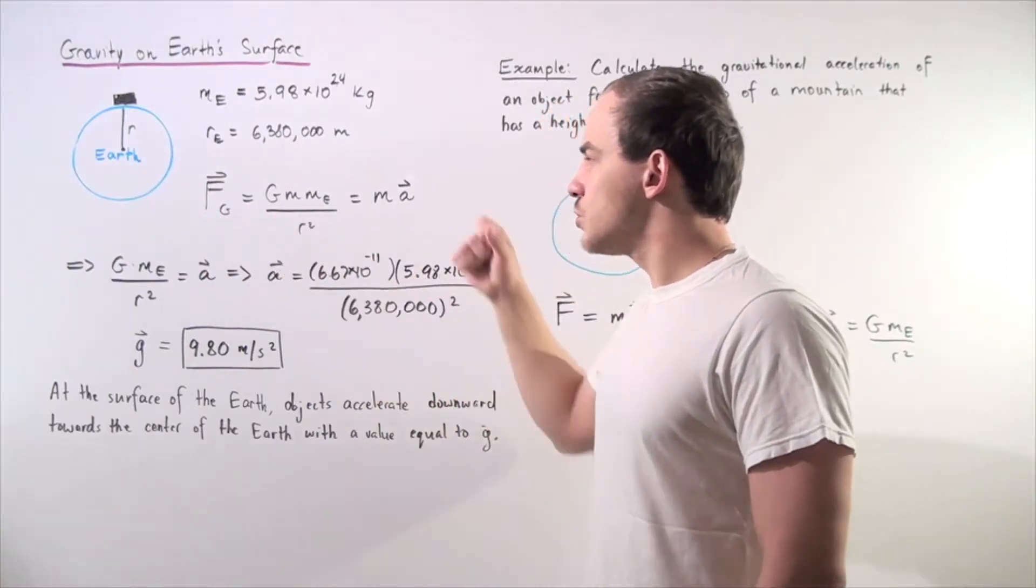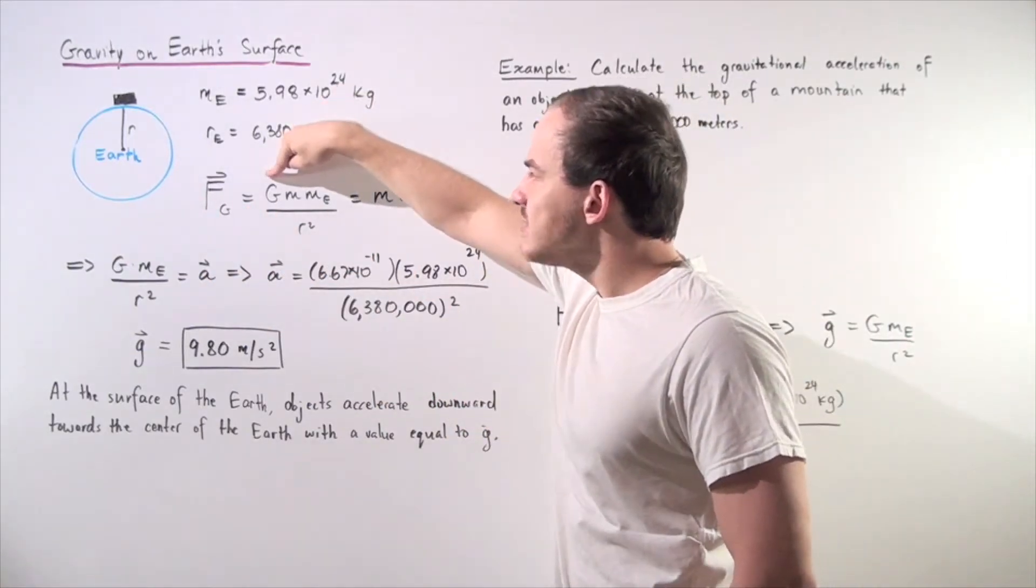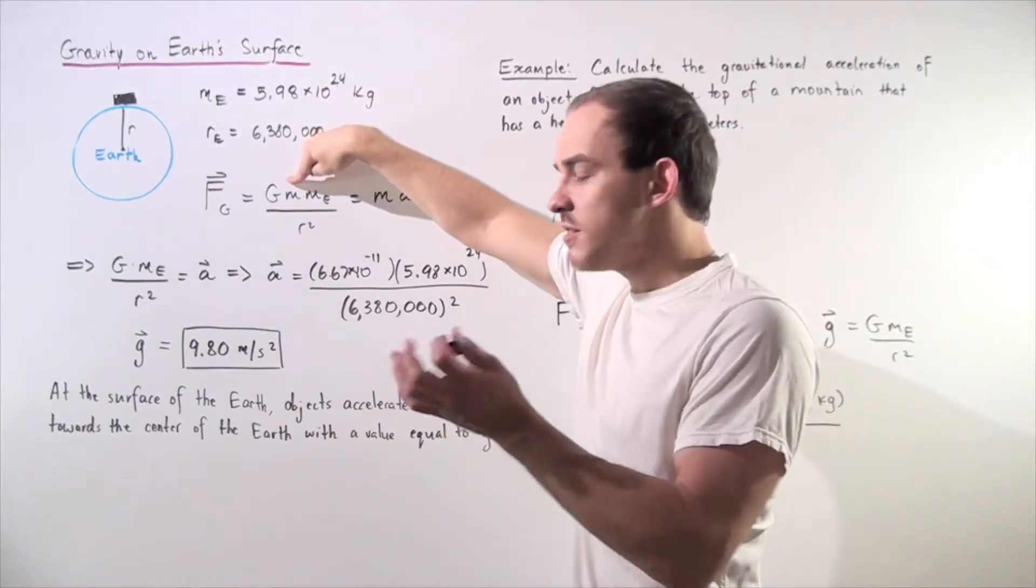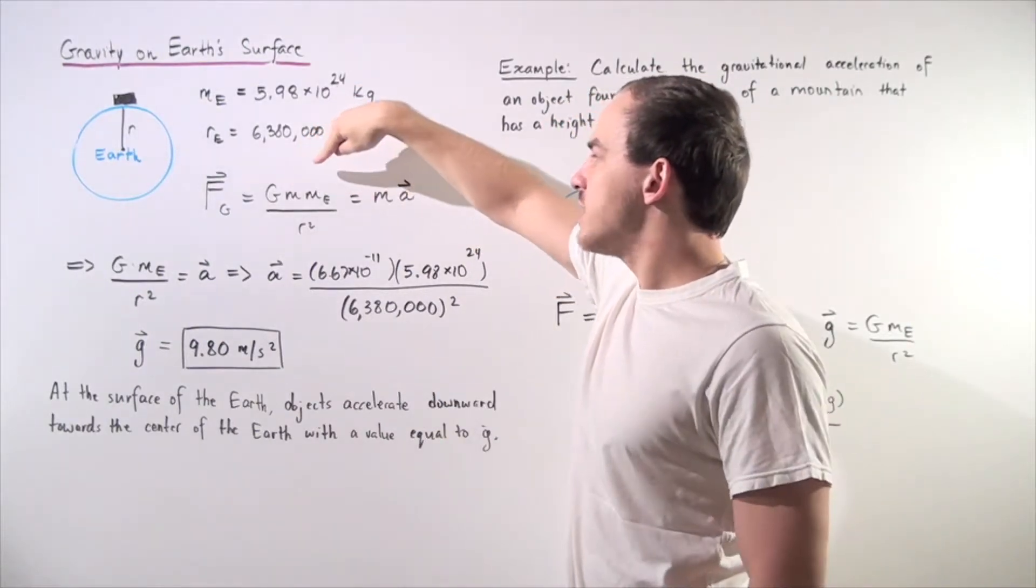So, the force is equal to the gravitational constant multiplied by mass of the object, my marker in this case, multiplied by the mass of the Earth,